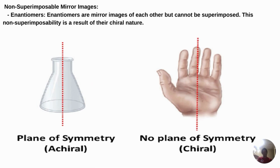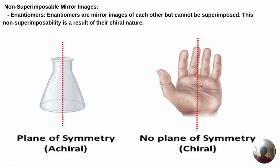Moving on to non-superimposable mirror images: enantiomers are mirror images of each other but cannot be superimposed. This non-superimposability is a result of their chiral nature. We also have to understand the plane of symmetry. If one molecule is superimposable on its mirror image, it is not a chiral center. If they are not the same when superimposed, then it is chiral.